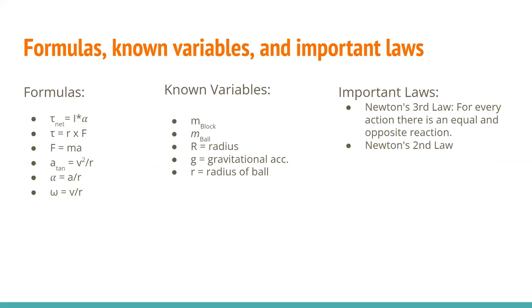Moving into our formulas and known variables and important laws: our first formula is net torque, which is equal to moment of inertia times angular acceleration. Torque is our radius cross our force. Force is equal to mass times acceleration. Tangential acceleration is equal to velocity squared over radius. Angular acceleration is equal to acceleration over radius. And angular velocity is equal to velocity over radius.